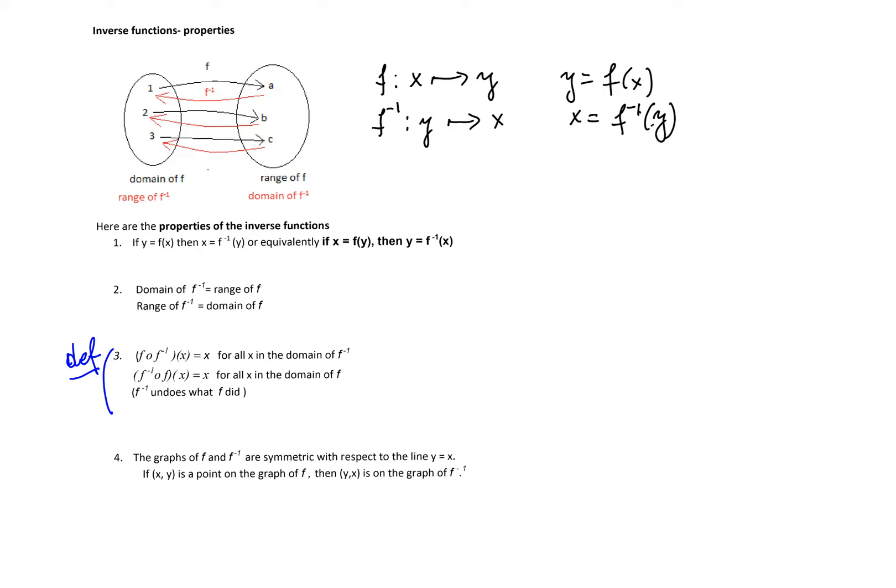And the last property is very important as far as graphs are concerned. Now we will say that the graphs of the function f and f inverse are symmetric with respect to the line y equals x. Why is that?